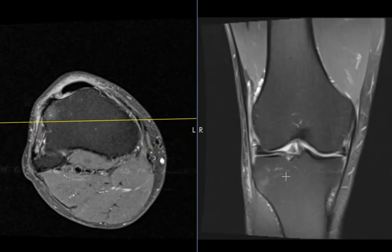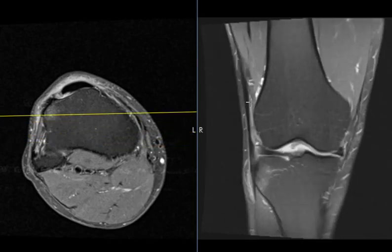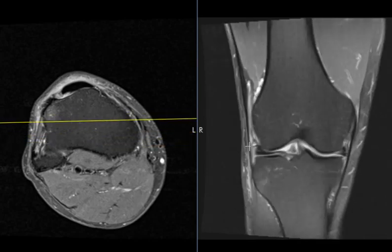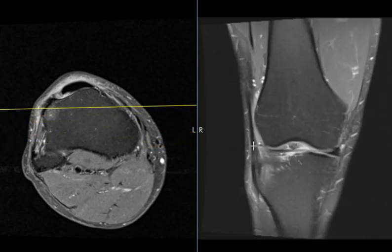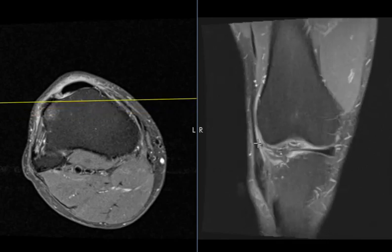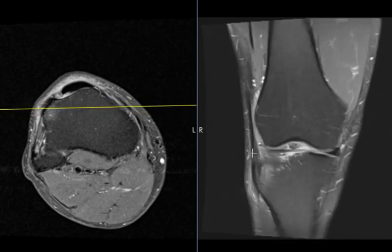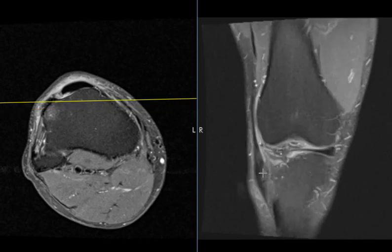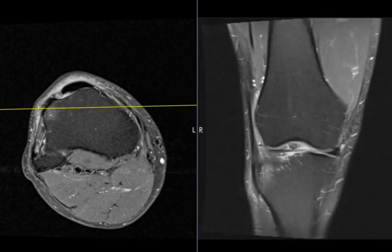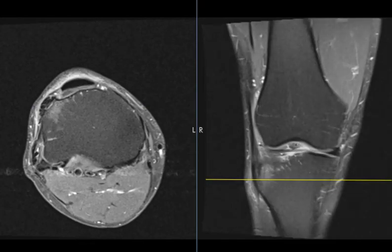That's it. So he's got evidence of ITB friction syndrome and some hypertrophic tendinopathy or inflammation of this distal iliotibial band with reactive marrow edema on Gerdy's tubercle. And that's it. Thank you so much.